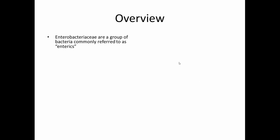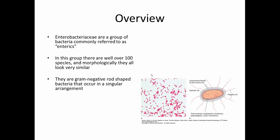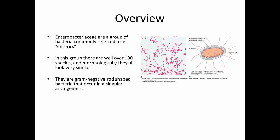Enterobacteriaceae are more commonly referred to as enterics. They are a group of bacteria that tend to inhabit the intestinal tracts of humans and animals. From a visual standpoint, if we do a microscopic examination, we'll see that morphologically all the members within this group look pretty much identical — and there are over a hundred different species. They are gram-negative, rod-shaped bacteria, or bacilli, that occur in a singular arrangement.